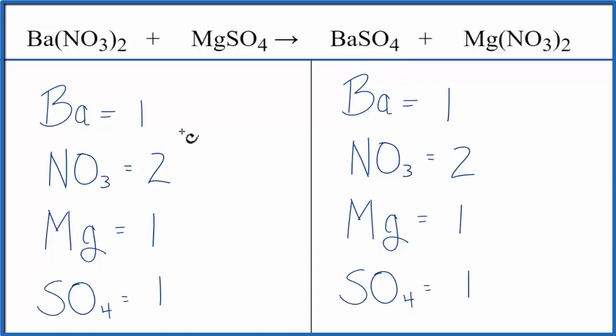And with that, we're done. You can see the numbers are the same on both sides, so this equation is balanced. Counting these polyatomic ions as one thing, if they appear on both sides of the equation, that's a real good strategy for this type of reaction.